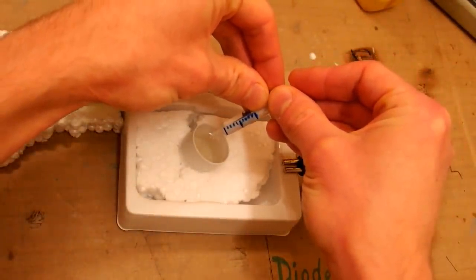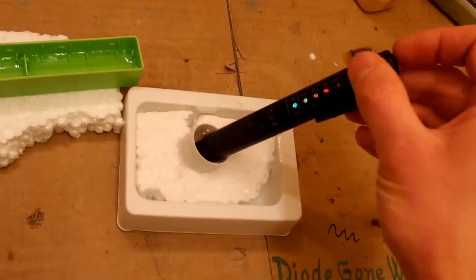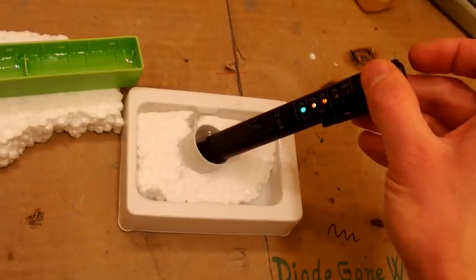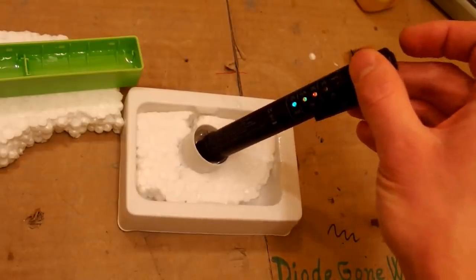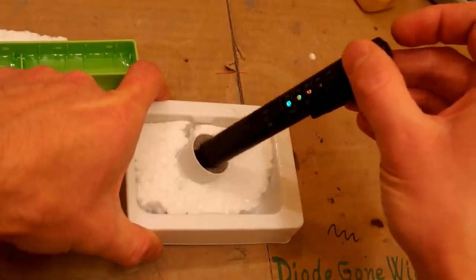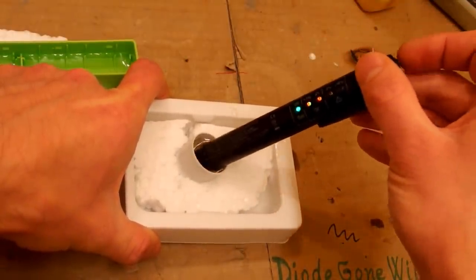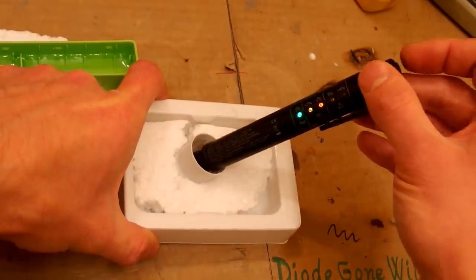Now let's try four percent. Another two drops or one division on my syringe. And let's stir it and it shows three percent. It's blinking, it's probably not stirred enough. Still two percent. Three percent.